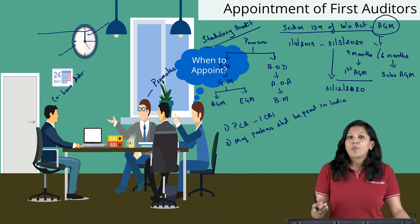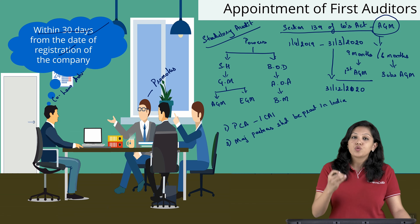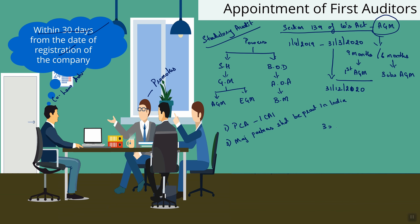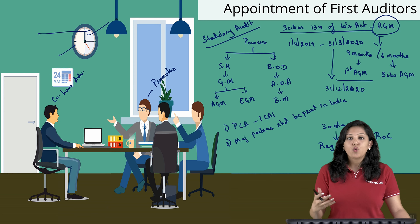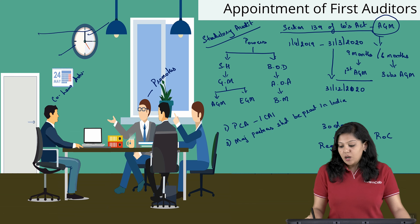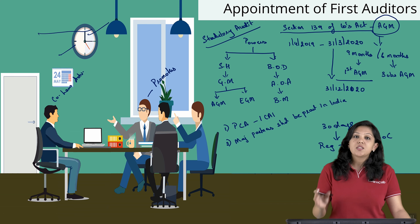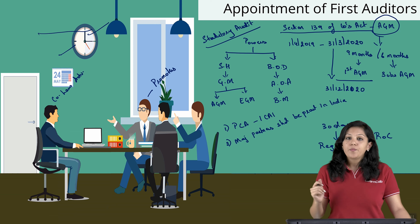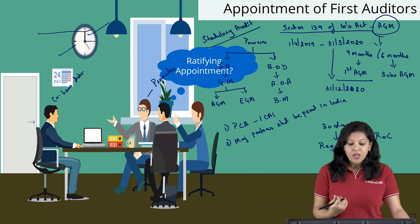The next question is: when to appoint first auditors? As per Section 139 of Companies Act 2013, statutory auditors are appointed at the AGM. But the Board of Directors also has the power to appoint the first auditor. The time limit is 30 days from the date of registration of the company. Registration is complete once the company receives its Certificate of Incorporation from the Registrar of Companies. Within 30 days of receiving that certificate, the Board must hold a meeting, select an auditor, and appoint them.